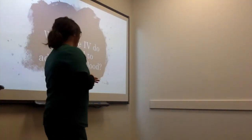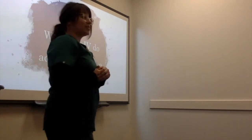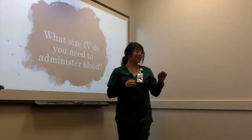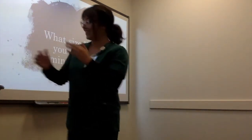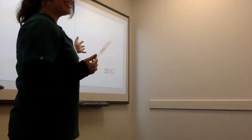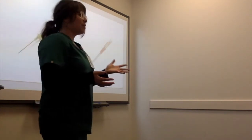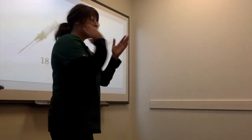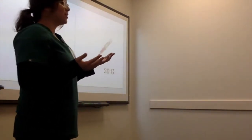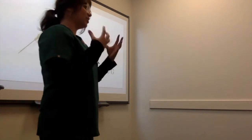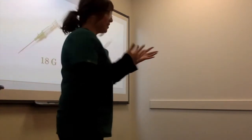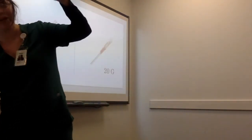Next question: what size IV do you need to administer blood? 18 gauge or 20 gauge IVs are preferred. Anything smaller than that, you'll be lysing — cutting in half — those blood cells, and the patient is not going to be getting the blood that they need. Half blood cells are not going to be helpful to the patient. You need that full red blood cell in order to restore them and bring up the hemoglobin.